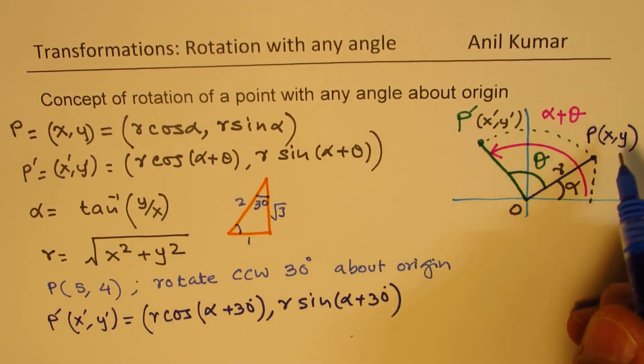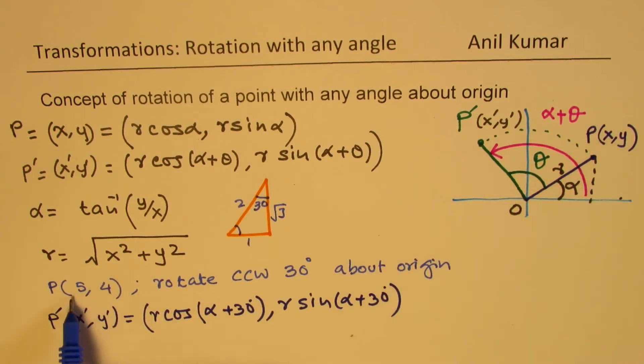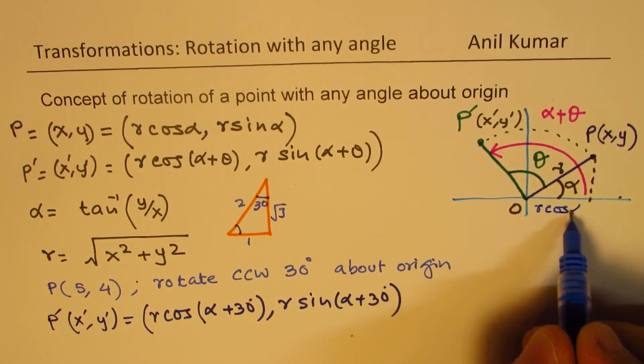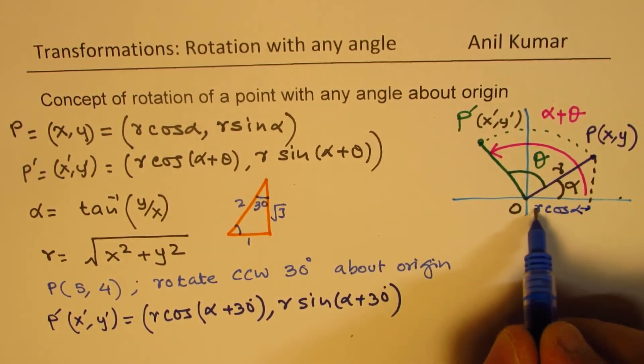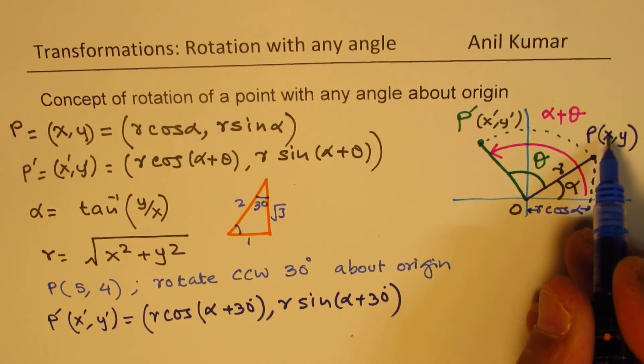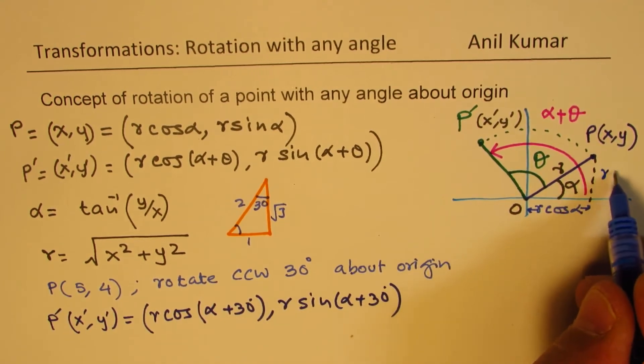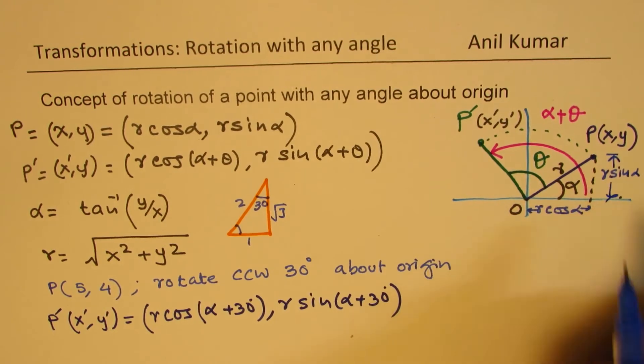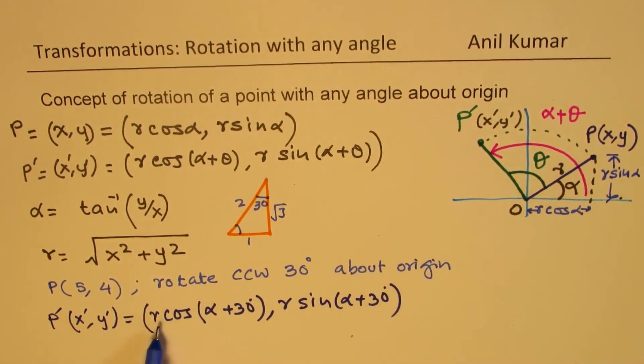Well, if we are given this point as 5, 4, in that case, this side here will be r cos alpha. So r cos alpha is the x-coordinate value, and this value here is r sine alpha. So in this case, when you expand, what do you get?